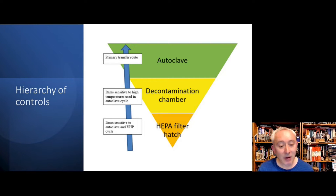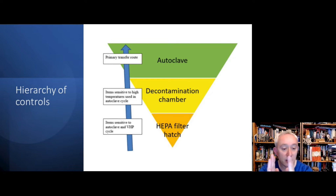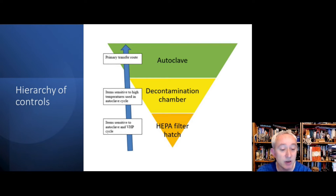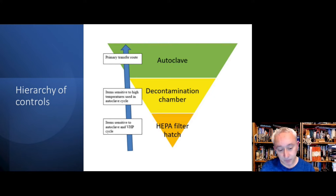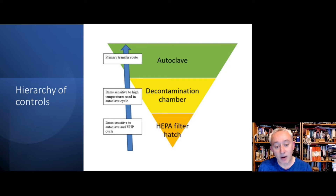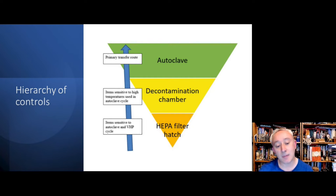We can conceptualize a hierarchy of controls using a GINA diagram. Autoclaving is at the top — it's the most robust method since it's a form of sterilization and a penetrative method where heat goes all the way through materials. Next are automated decontamination chambers, which use a gas cycle like hydrogen peroxide and are more consistent in applying sporicide in vapor form. Then we have dynamic pass-through hatches with HEPA-filtered air supply, where items are manually disinfected and flushed with HEPA-filtered air.